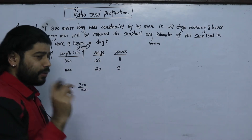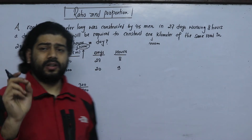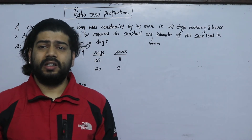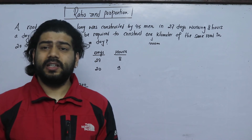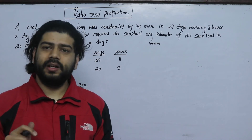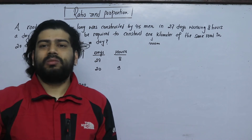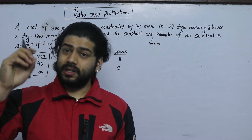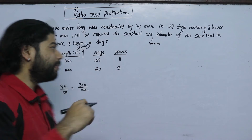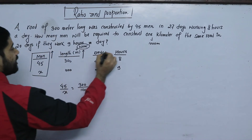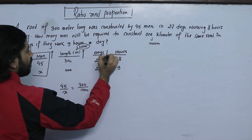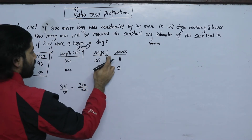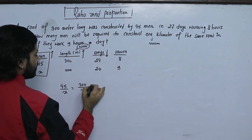So doing the calculation step by step — 10,000 times and 20,000 times — we get the required number of days. What is the required number of days? This is the required number of days we use in the proportion.